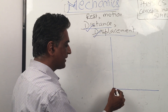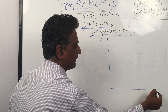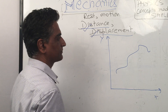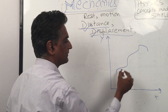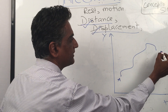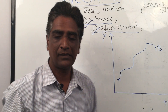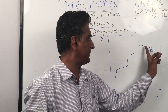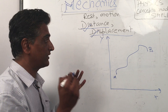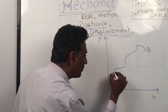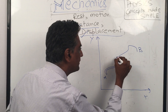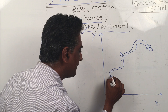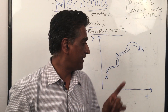We have this reference frame with the y-axis and x-axis, and a body went from point A to point B along a curved path. If anybody asks what is the distance covered, in physics we use that word precisely. Distance is like putting a thread along the path — this whole actual path followed by the object. That is called the distance.